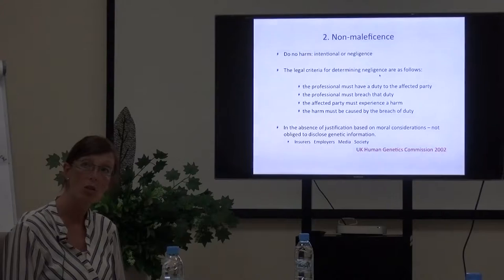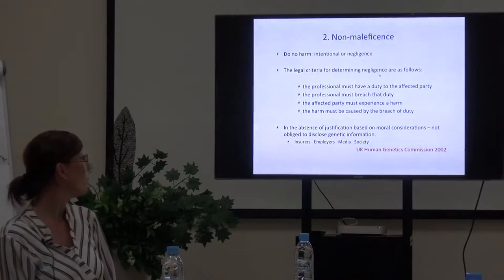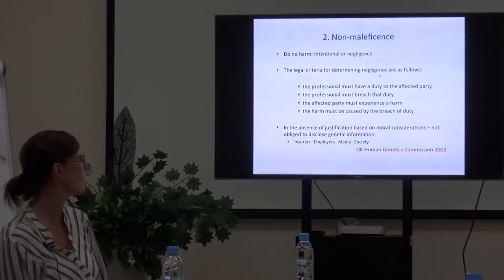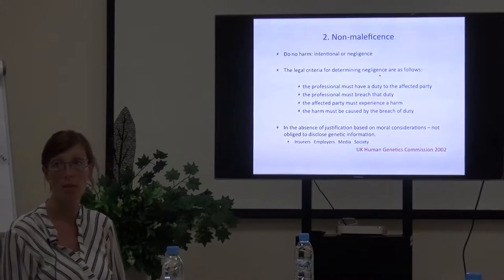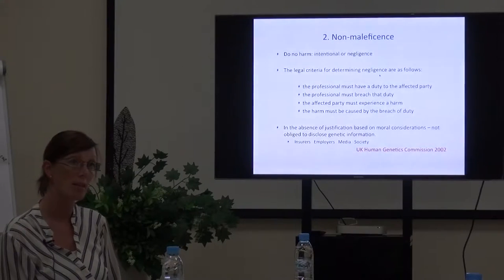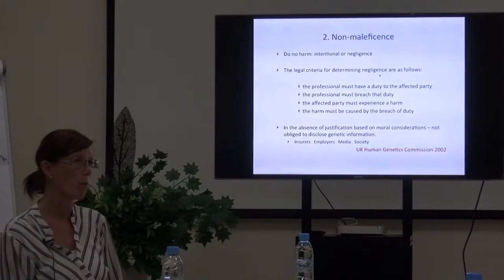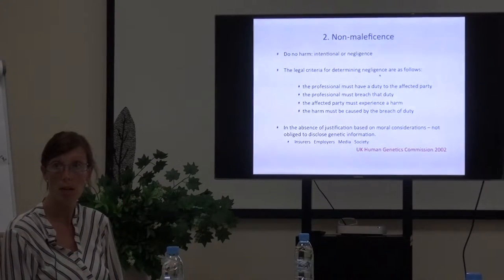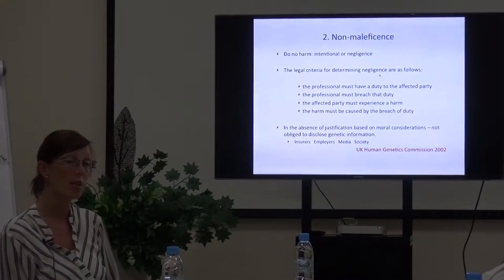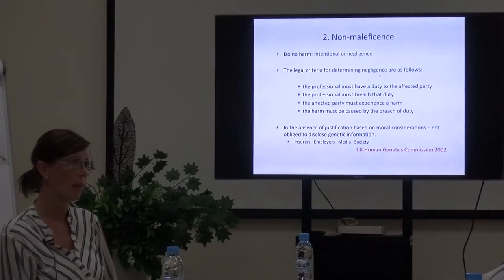How do we apply non-maleficence to genetics? We need to consider who should be informed. To prevent non-maleficence, we should not inform third parties — that includes insurance companies, which may not be as applicable in this country but could become more so in the future, employers, the media, or society. To uphold non-maleficence, this is a key statement we apply in terms of genetic interpretation.